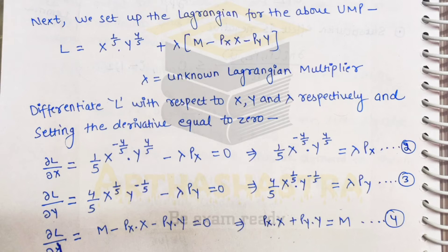Differentiating the utility function with respect to x, treating y raised to the power 4/5 as constant, we get 1/5 times x raised to the power −4/5 times y raised to the power 4/5, minus lambda times px, equals zero. Solving further gives us: (1/5) x^(−4/5) y^(4/5) = lambda × px. We mark this as equation number 2.